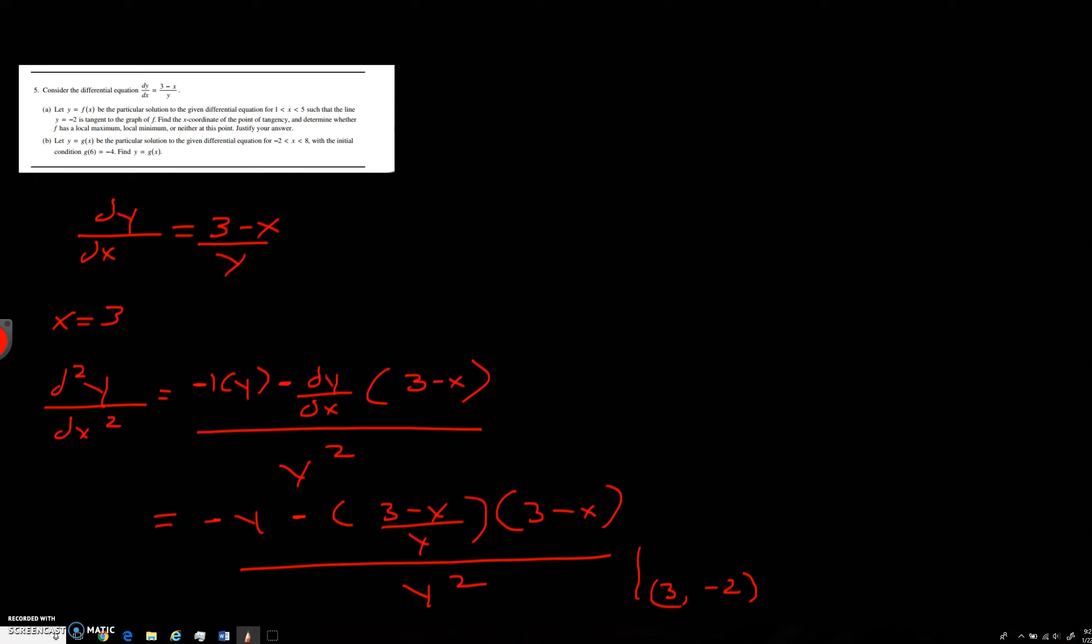When you plug in 3, negative 2, you're going to get negative negative 2 minus 3 minus 3 is going to be 0 times another 0, 3 minus 3 is 0, all over negative 2 quantity squared.